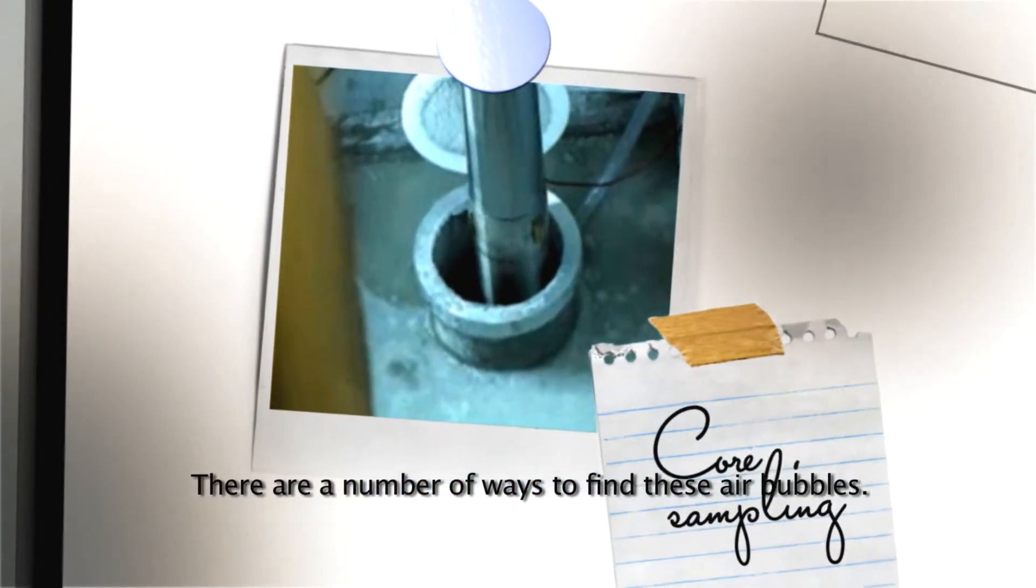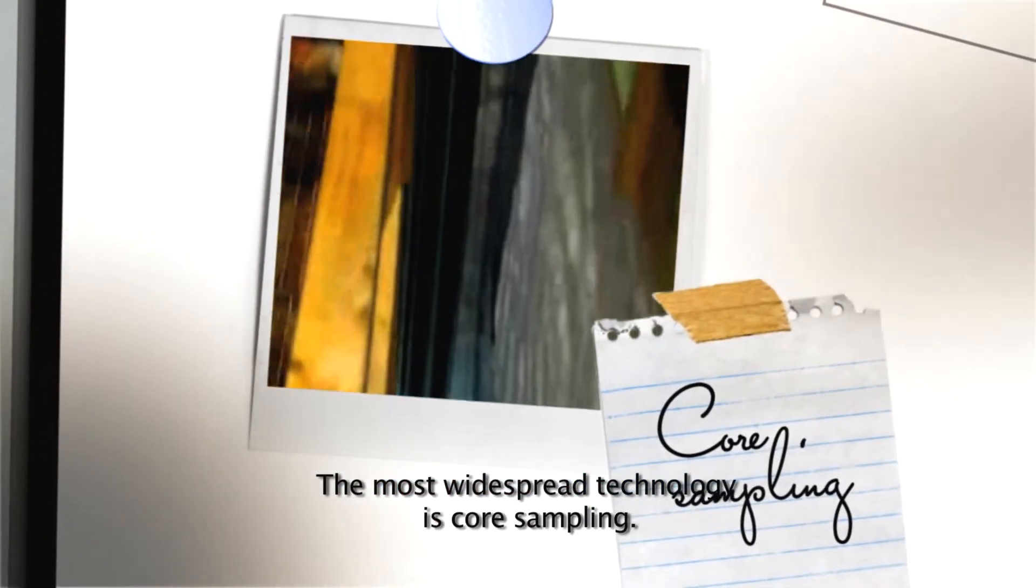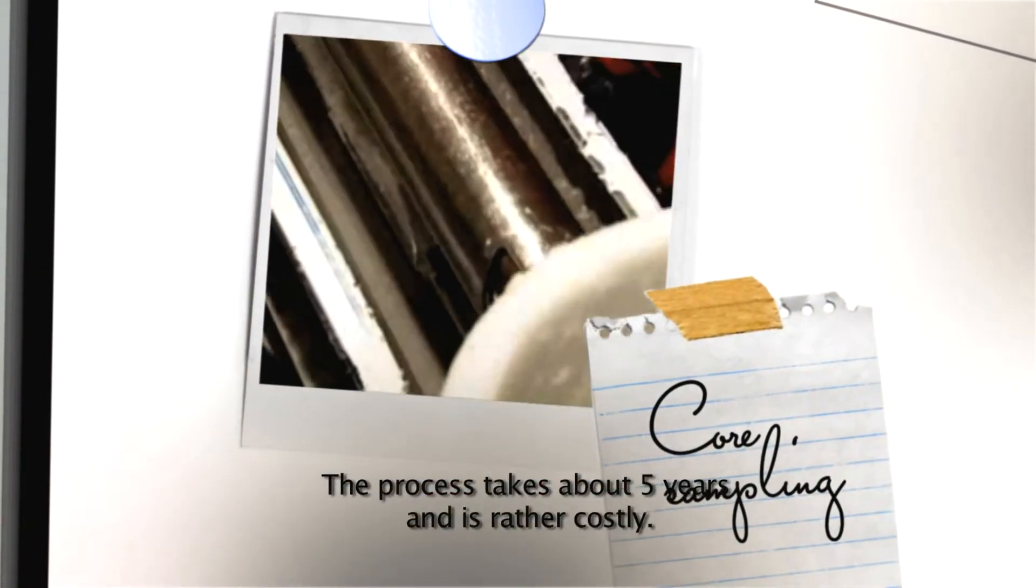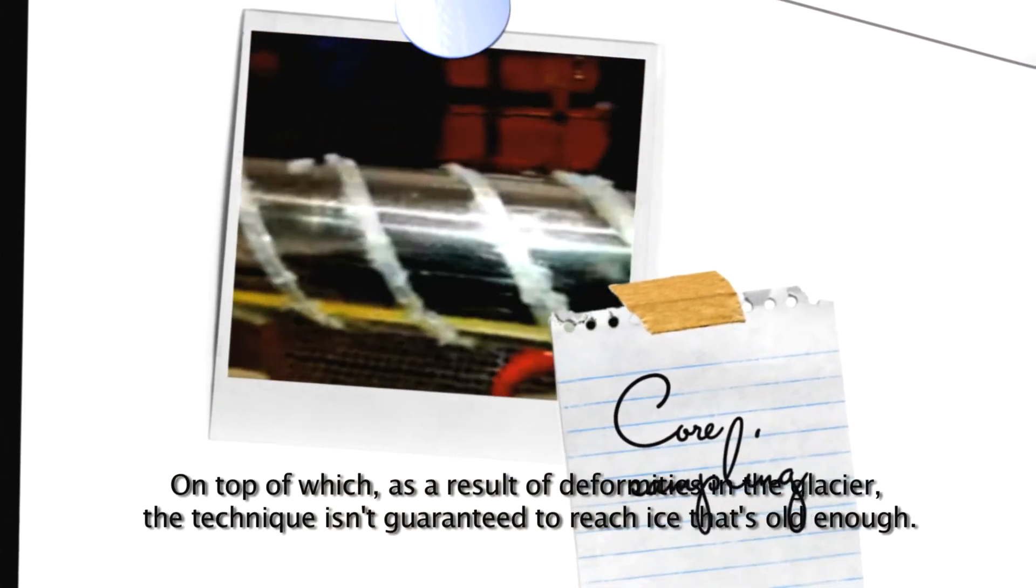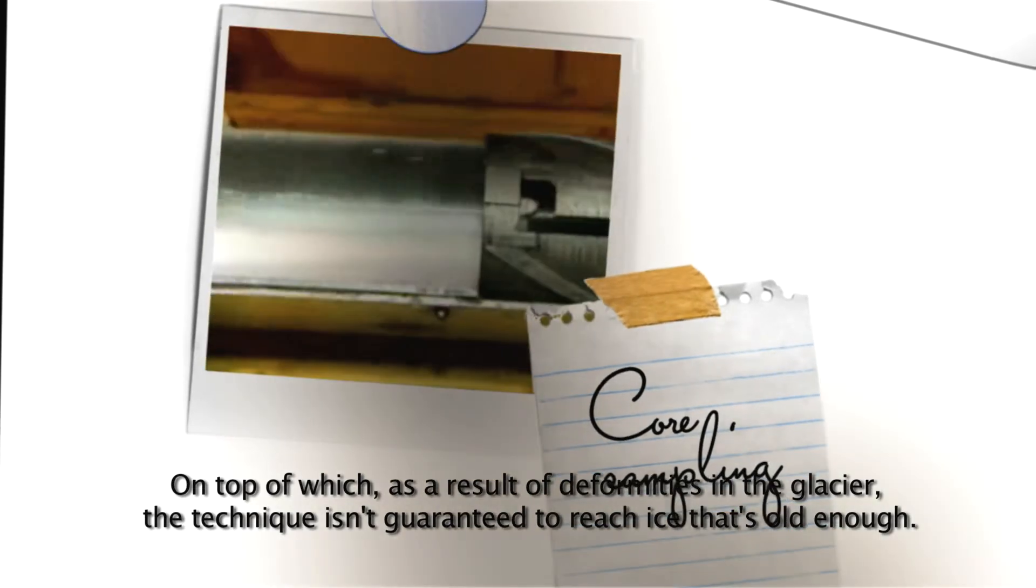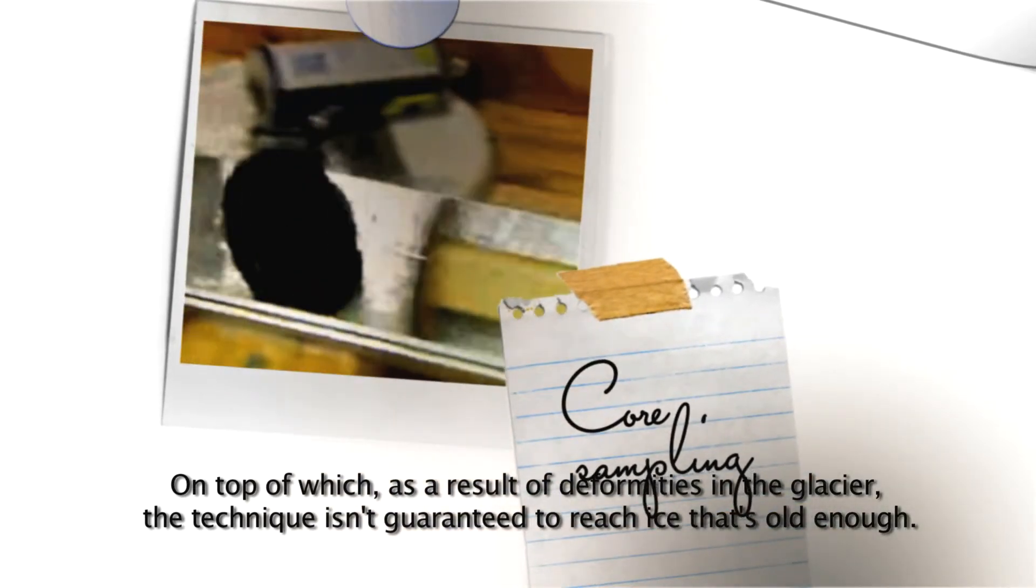There are a number of ways to find these air bubbles. The most widespread technology is core sampling. The process takes about five years and is rather costly. On top of which, as a result of deformities in the glacier, the technique isn't guaranteed to reach ice that's old enough.